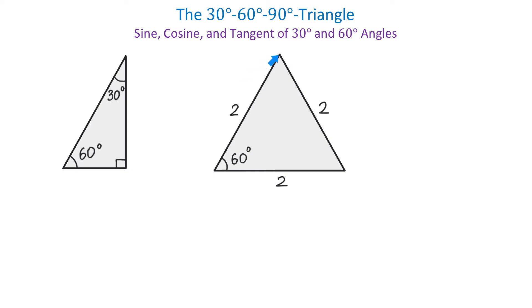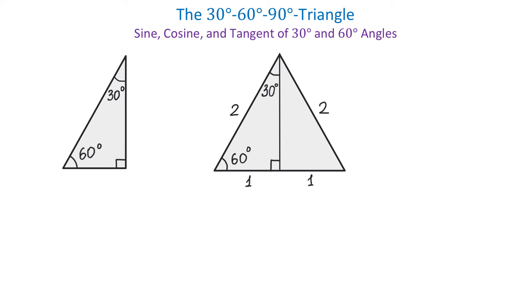From this corner, let's draw a perpendicular down to the bottom side. Then this side is split into two equal parts, each of length one — here we have one unit and here we have one unit. This perpendicular forms a 90 degree angle with the bottom side, and it also splits this 60 degree angle into two equal angles, each of 30 degrees. Notice that we just split this equilateral triangle into two right triangles, and each one has angles that measure 30, 60, and 90 degrees.